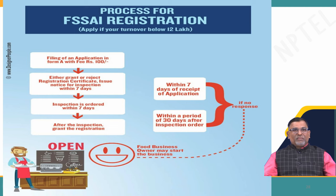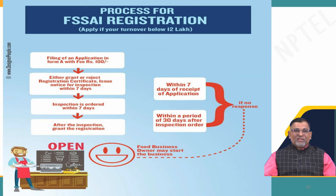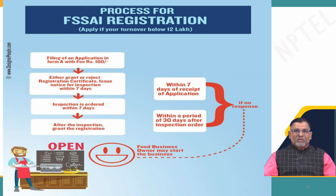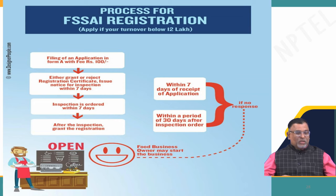Either a certificate or a license is mandatory under the new rules to start a food business. A maximum of 30 days is given, and if the food safety authority does not make an inspection within 30 days, the application is deemed to be granted and you can start your business. With the advent of technology, the food safety authority has made its online process for registration, and the processes are very simple.